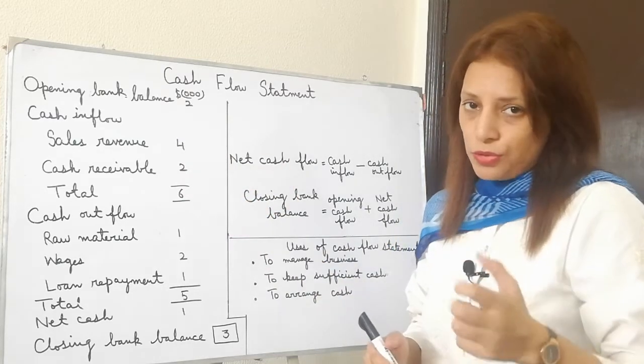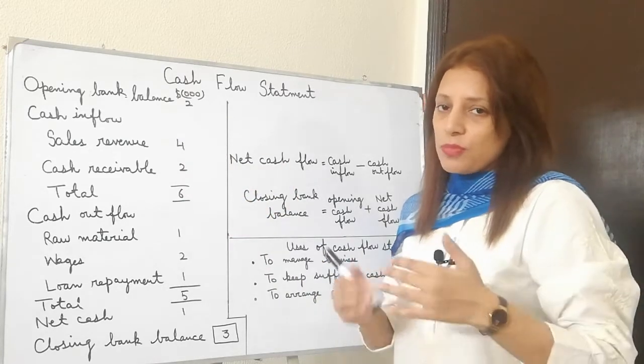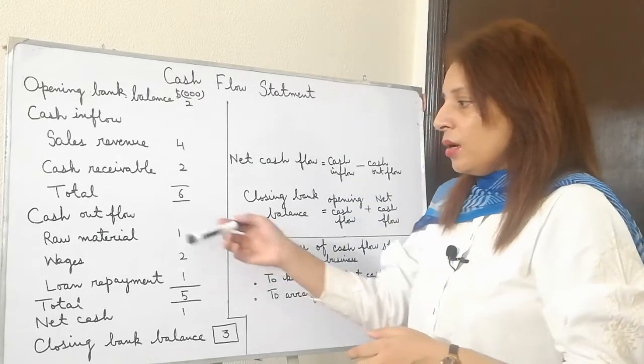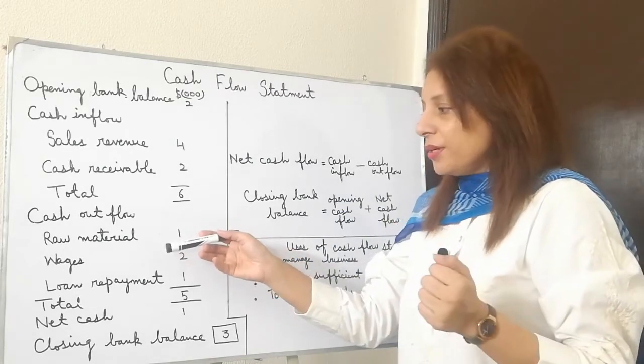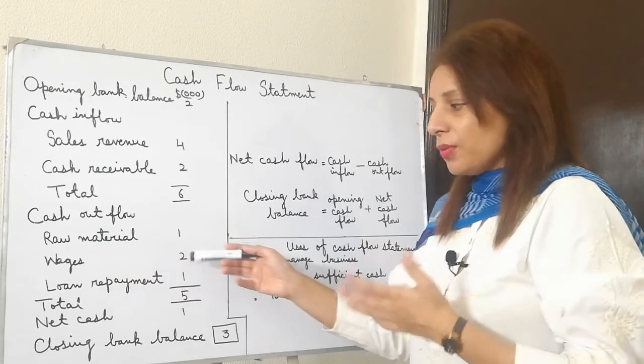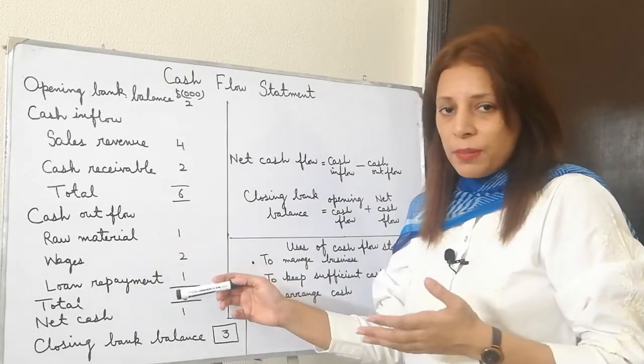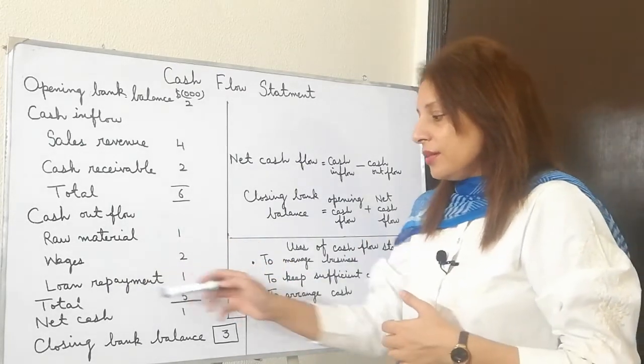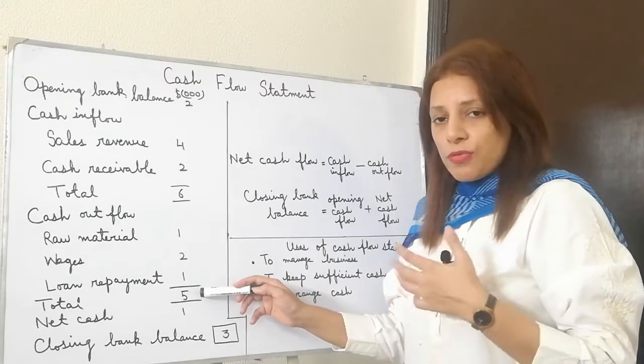So we will enter that and then the total of cash inflow. Then we have cash outflows. There can be different ways through which money goes out of the business. One can be you have to pay for raw material. Other can be wages. Loan repayments if you have taken any kind of loans from the banks.